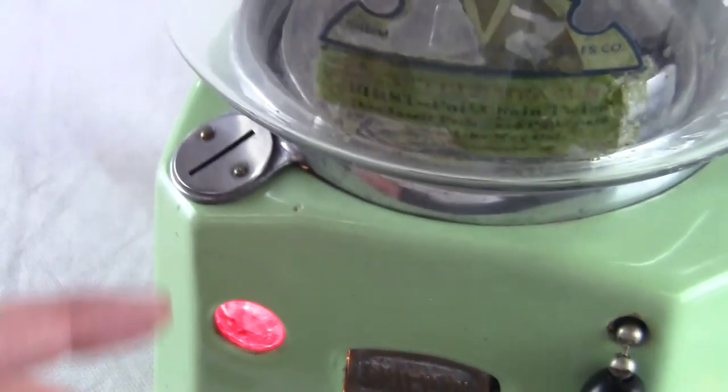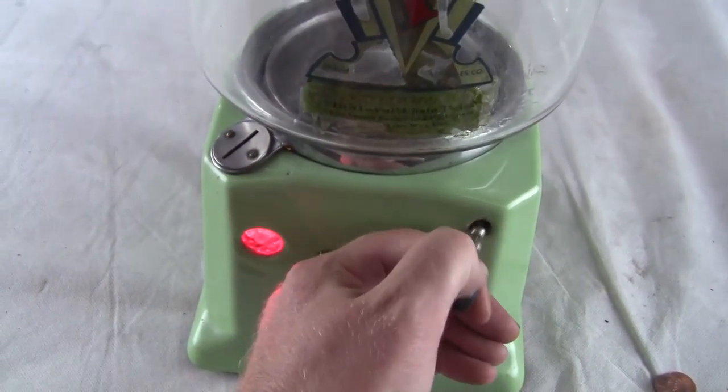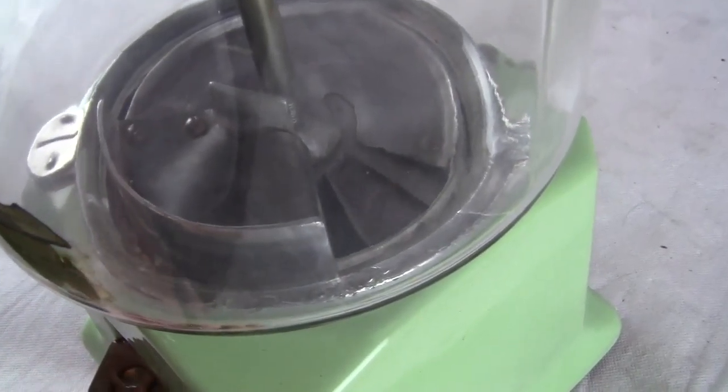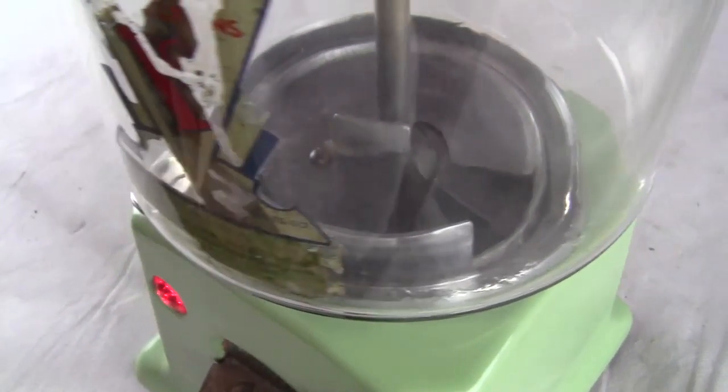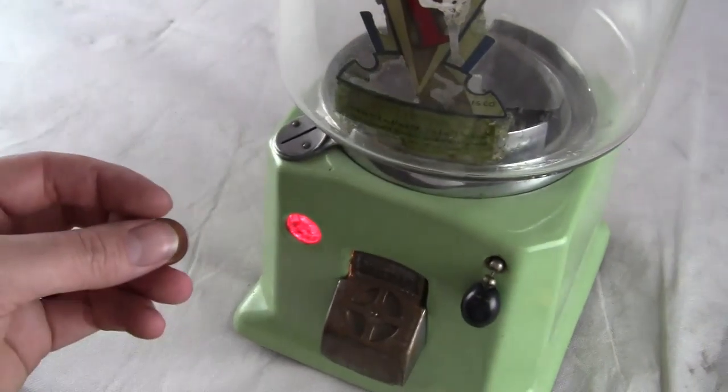You pull the chain to make it vend. You place a penny in here, pull the chain, and it will turn that wheel inside and vend out peanuts, gum, candy, whatever you're going to put in it.